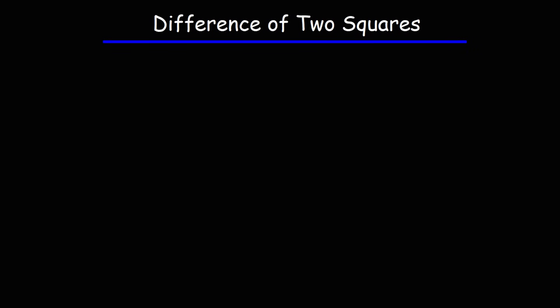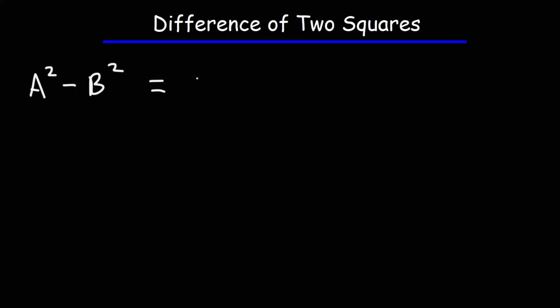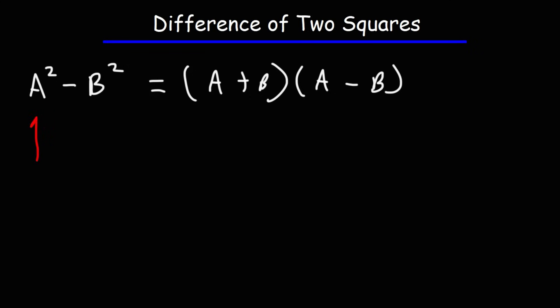In this video we're going to talk about how to factor difference of two squares. Here's the formula you need to know. If you're given a problem a squared minus b squared — this is a square, this is a square, and with a minus sign we have a difference of two squares — then a squared minus b squared can be factored into a plus b times a minus b. All you need to do is find the square root of a squared, which is a, and the square root of b squared, which is b, put them in parentheses and separate a and b with a plus and minus sign.